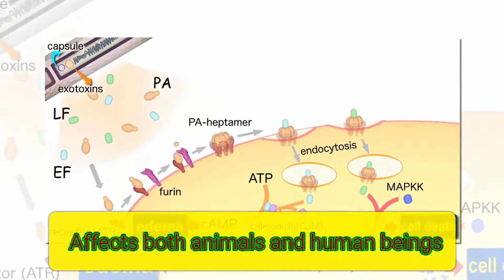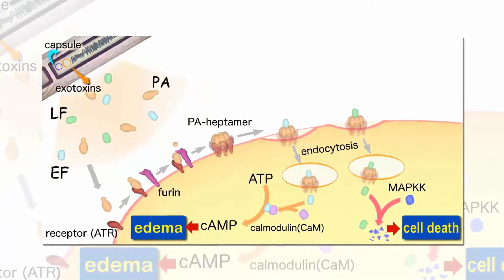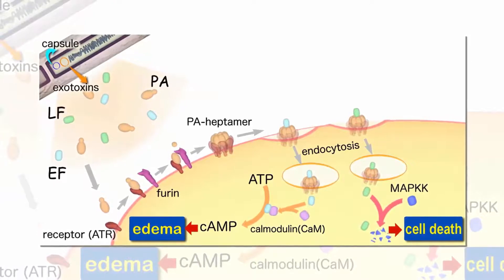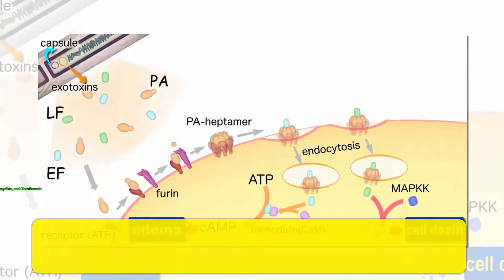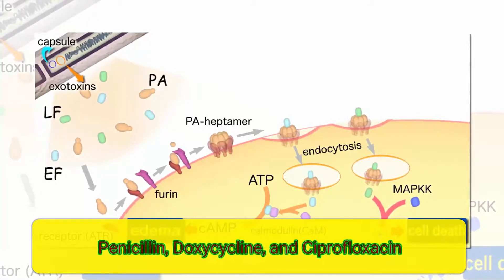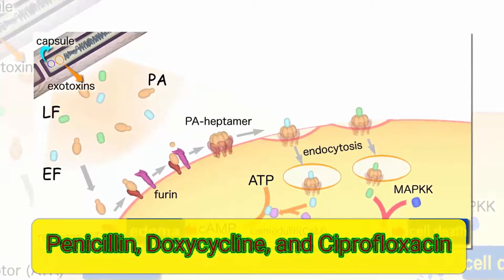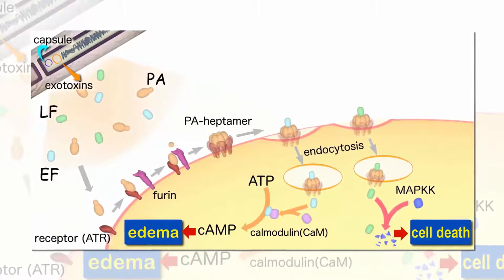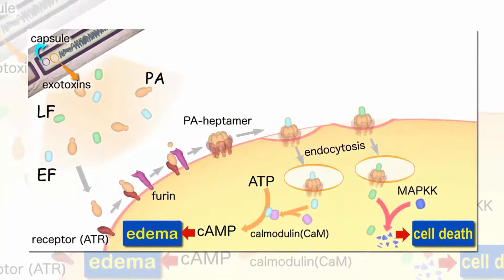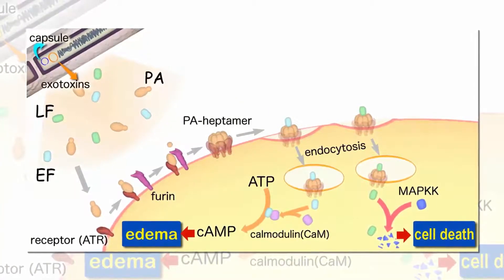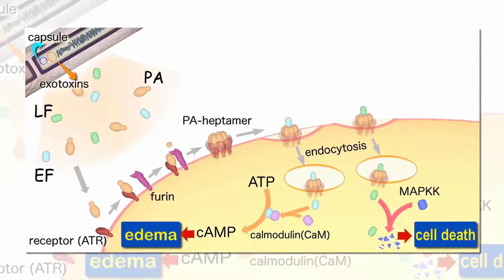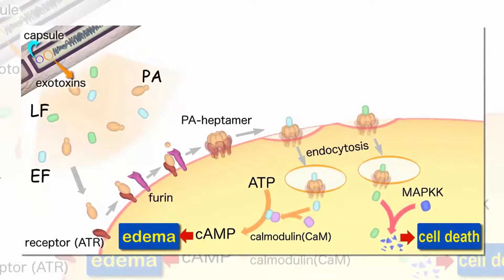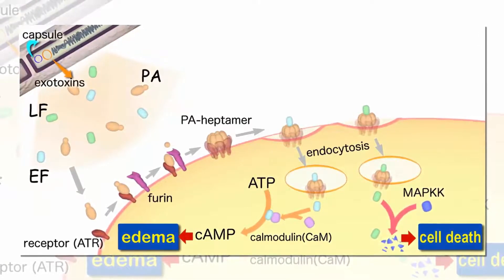Antibiotics are usually used to treat anthrax. Antibiotics that may be prescribed include penicillin, doxycycline, and ciprofloxacin. Inhalation anthrax is treated with a combination of antibiotics such as ciprofloxacin plus another medicine. They are given intravenously.